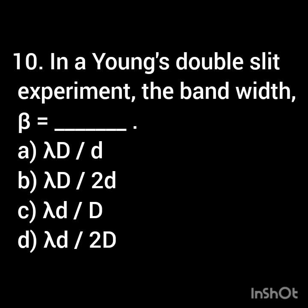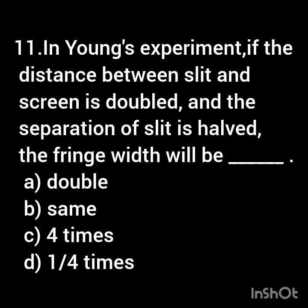In Young's double slit experiment, the fringe width beta is equal to [blank]. In Young's experiment, if the distance between the slit and screen is doubled and the slit separation is halved, then the fringe width will be [blank].